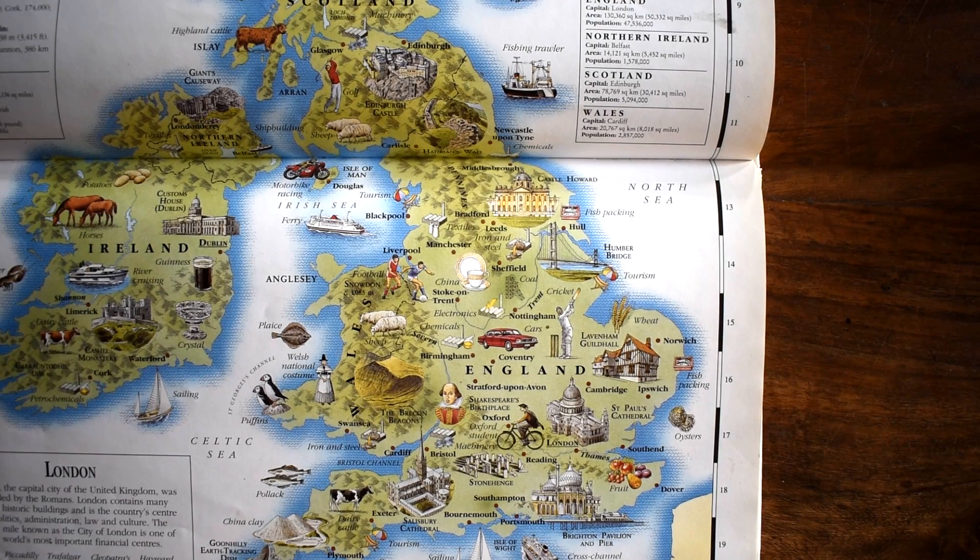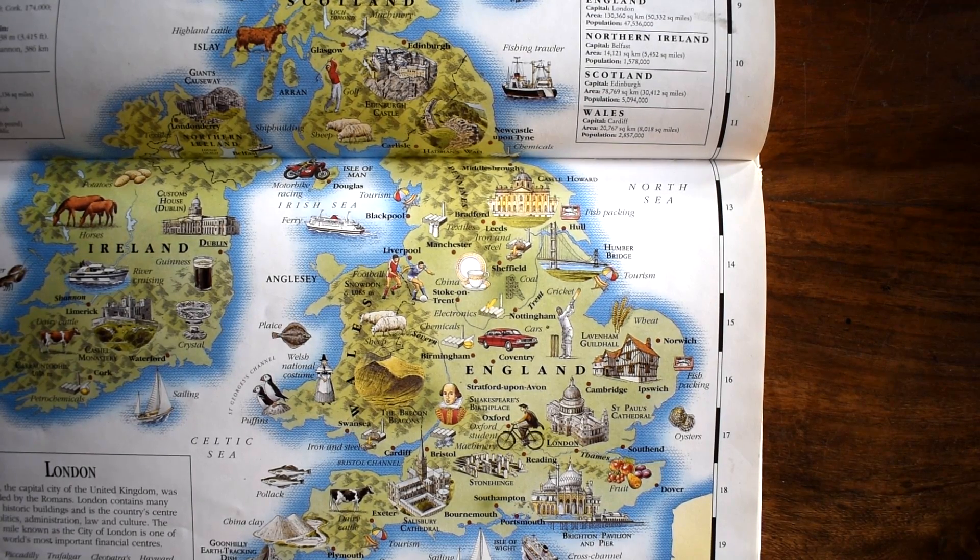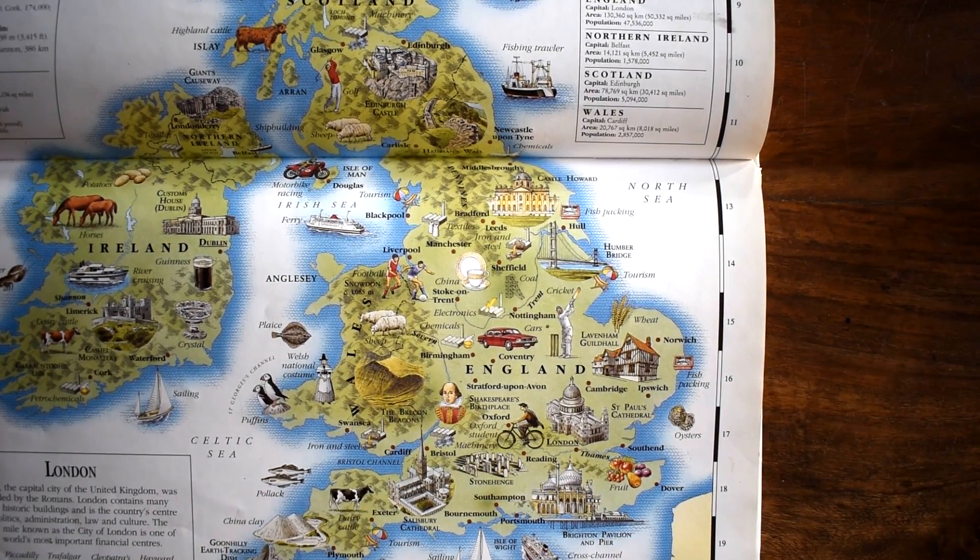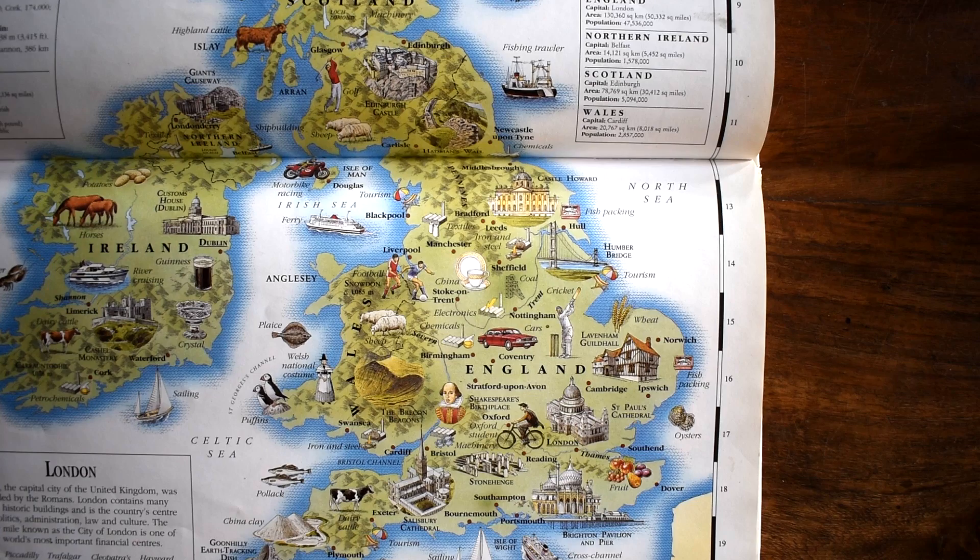If I wanted to show someone where in England I am, I could just point to a spot on this map, and that point is lying exactly above the place it represents, my kitchen table.